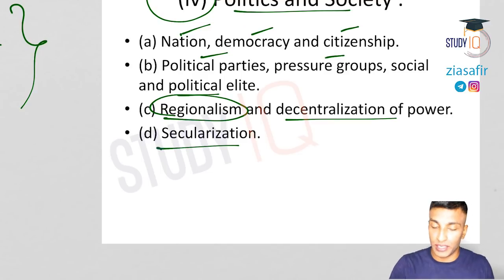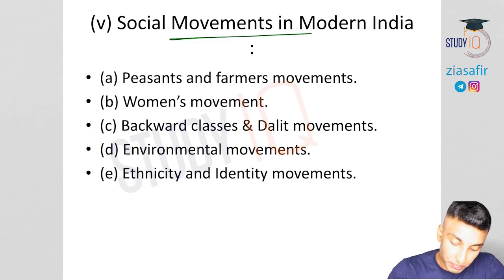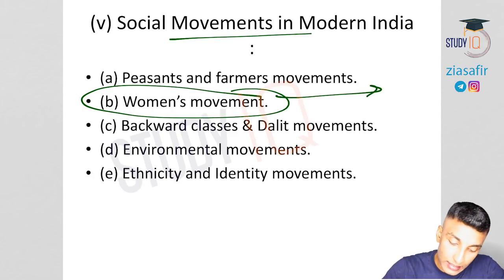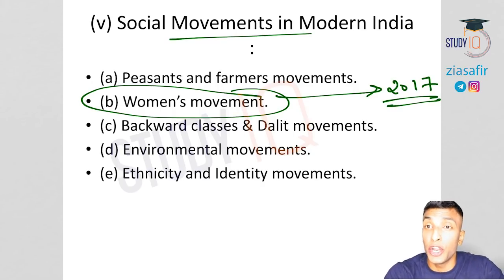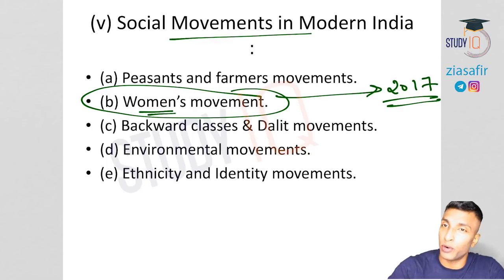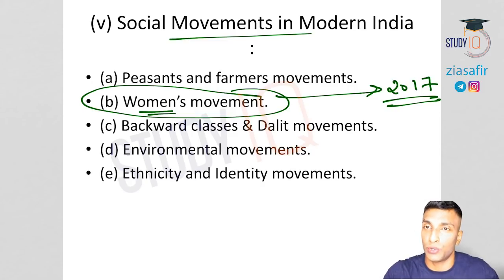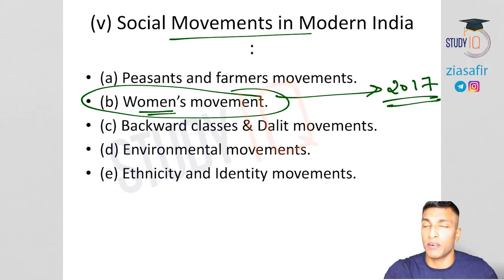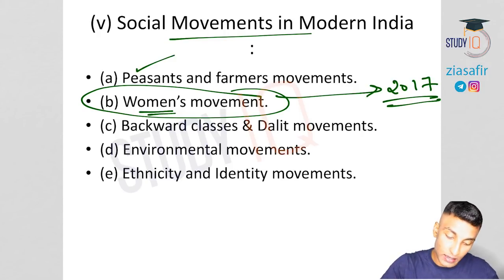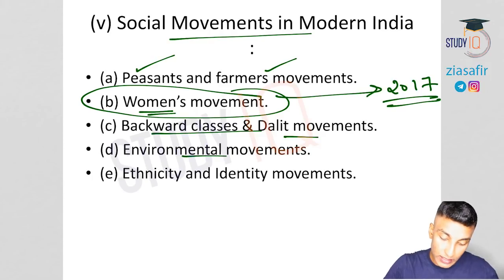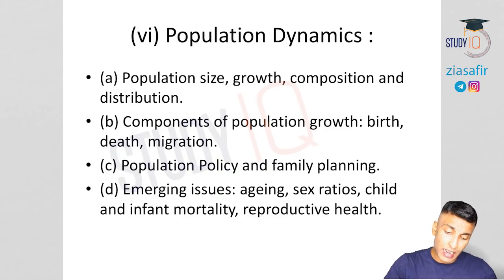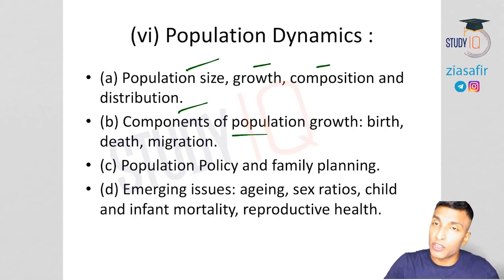Secularization is directly in the syllabus. Social movements in India are a major section — women's movements, including the new women's movement which was an essay question in 2017, peasant and farmers' movements, backward class and Dalit movements, environmental movements, and ethnicity and identity movements. All are potential essay questions. Population dynamics covers population size, growth, composition, distribution, components of population growth, population policy, family planning, and emerging issues.